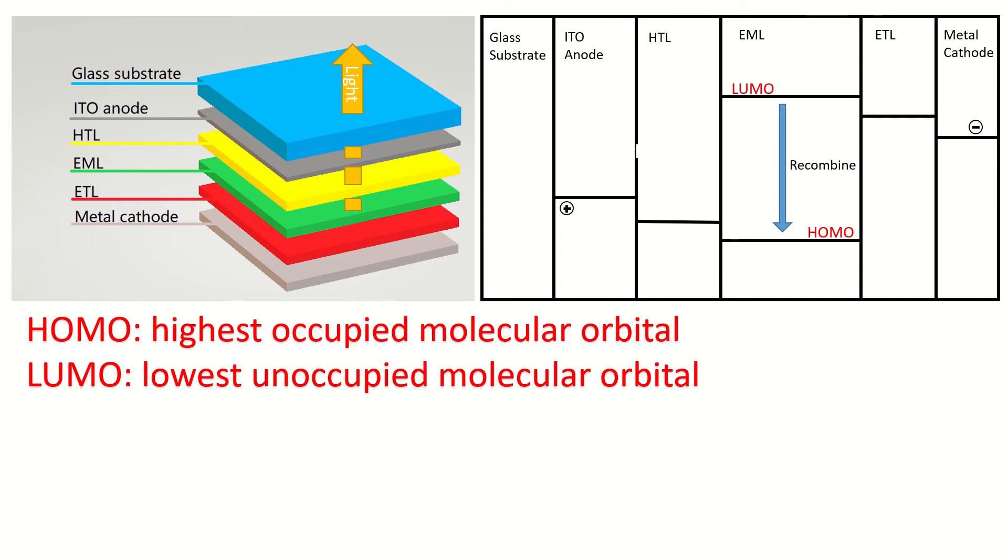Here is the OLED device structure and the band structure. We can see that OLED has a very similar band structure as classical semiconductor devices. Here LUMO means the lowest unoccupied molecular orbital and HOMO refers to the highest occupied molecular orbital.